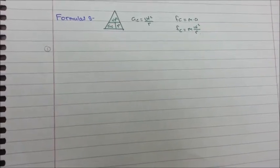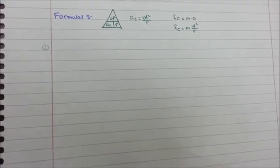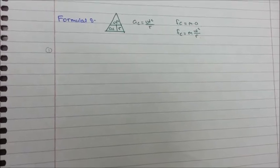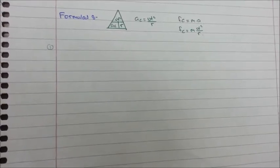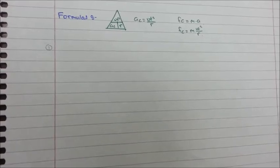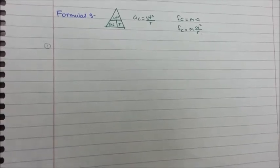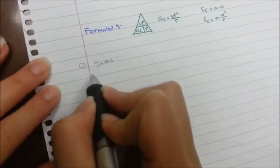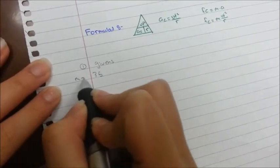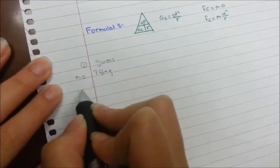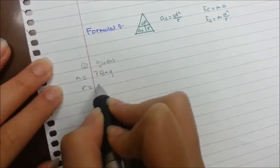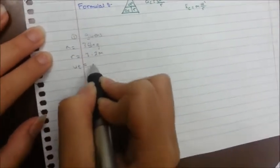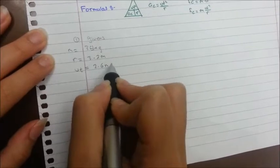Now let's try to solve a question. A 35-kilogram child moves with uniform circular motion while riding a bike on a roundabout. The bike is 3.2 meters from the roundabout center and has a tangential speed of 2.6 meters per second. Our givens are: mass = 35 kg, radius = 3.2 m, and Vt = 2.6 m/s.